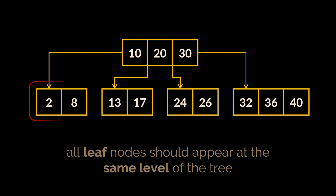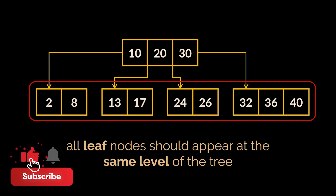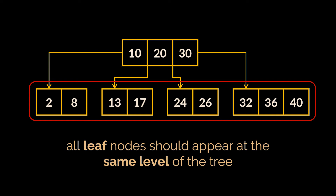The last property a tree must satisfy to be a valid B-tree is that all its leaf nodes should appear at the same level of the tree. This is understandable given that a B-tree is a self-balancing tree whose ultimate goal is to reduce its height in order to speed up operations. Now that we know what a B-tree is and its properties, let's look at the operations provided by a B-tree, starting with the insert operation.